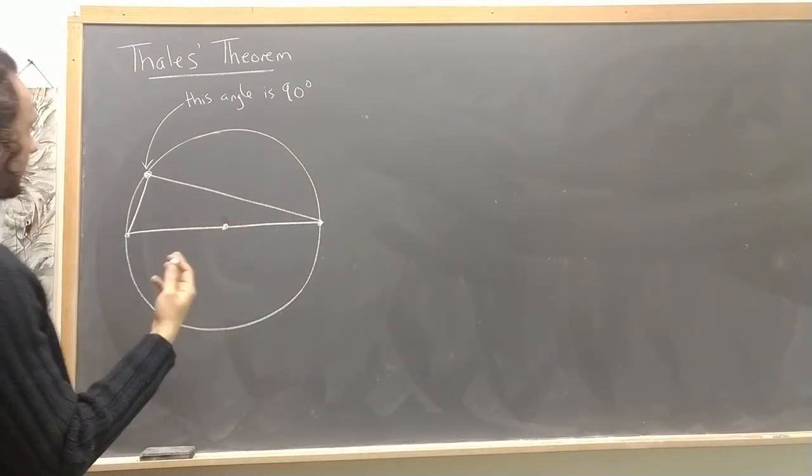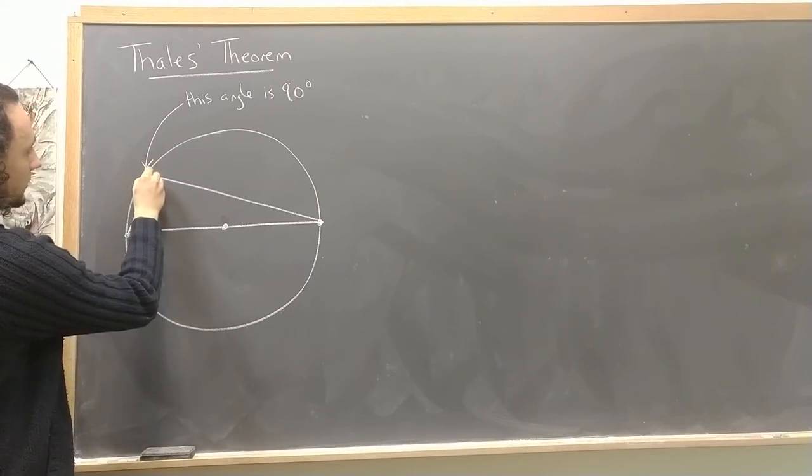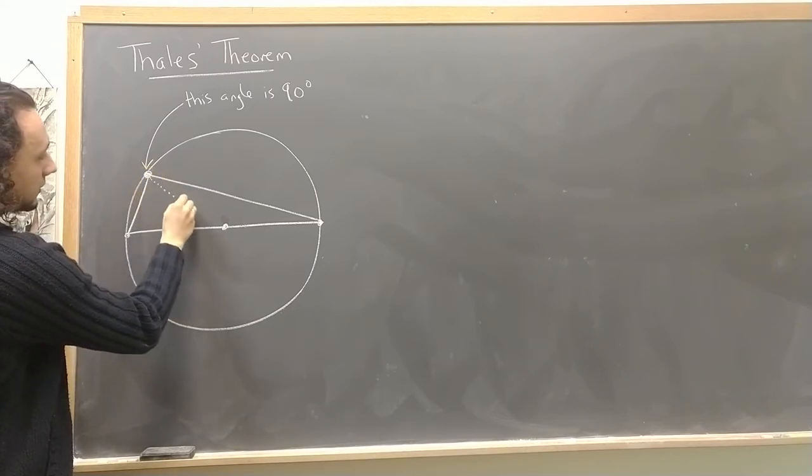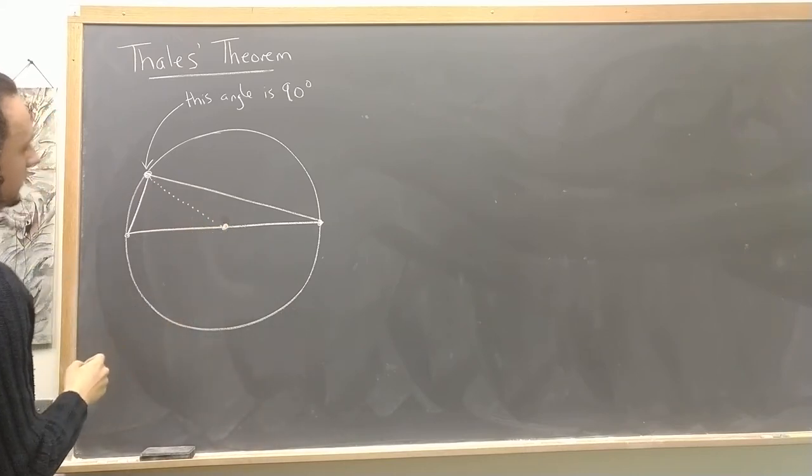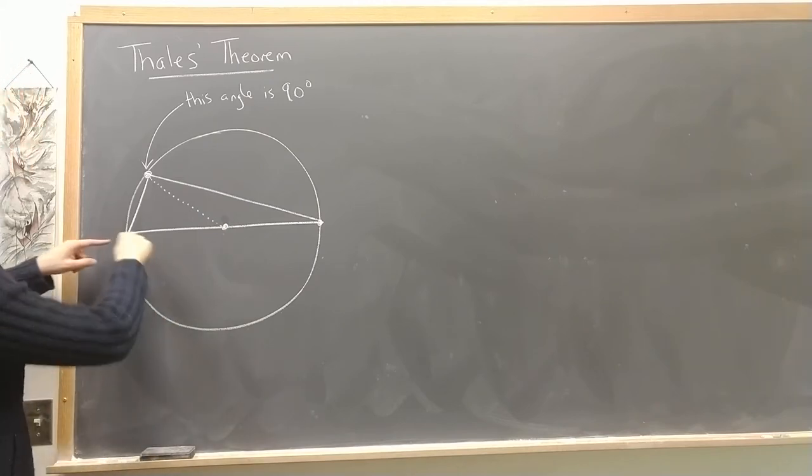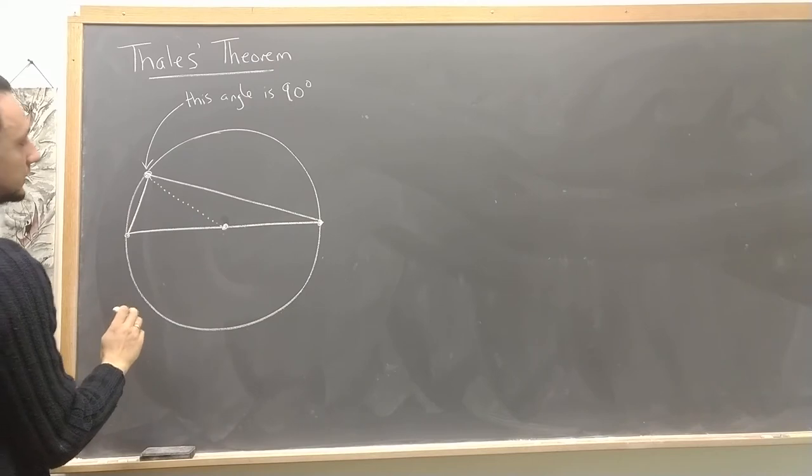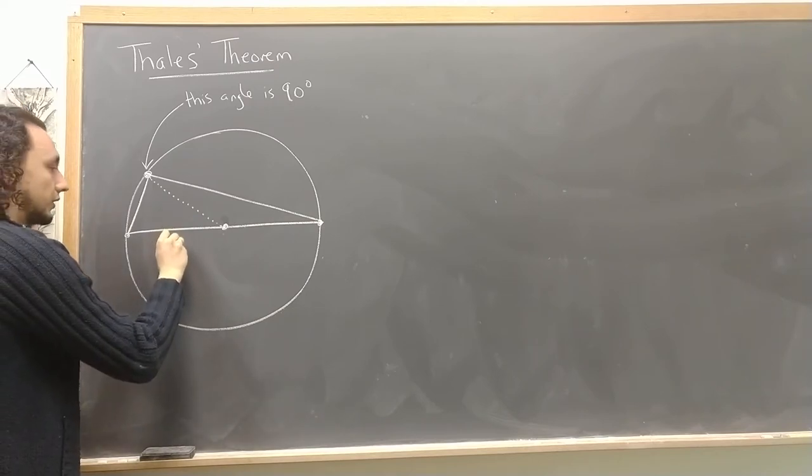So let's prove this. The proof is actually very short and it uses something that we've seen before. So the first thing to do is to connect this point that I chose to the center of the circle. And once I do that, I've divided this large triangle here into two smaller triangles. And I can reason about them as follows.